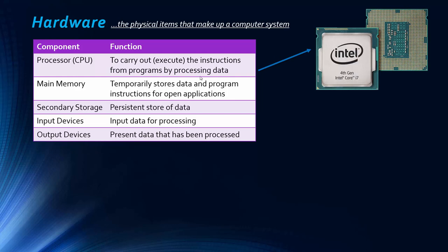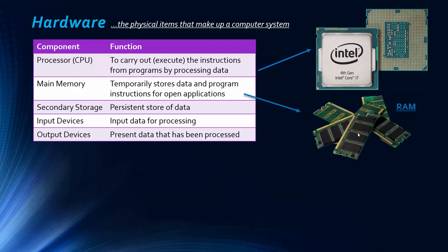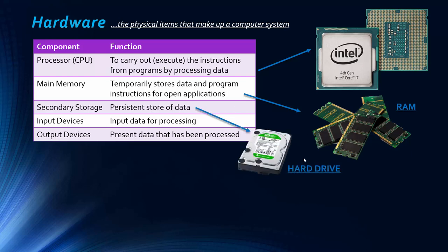This is what a processor looks like. You won't be able to see it like this on a computer because it will be covered by a large heatsink. The main memory looks a bit like this — you have these sticks of RAM plugged into your motherboard. The motherboard isn't listed on the specifications, so I'm not going to cover it. Secondary storage — this is a hard drive, one example of magnetic technology.